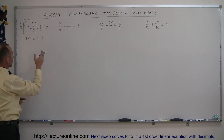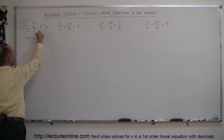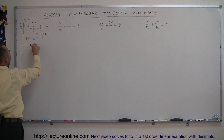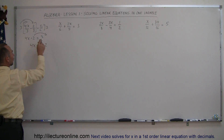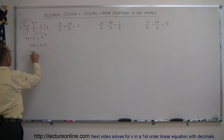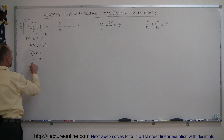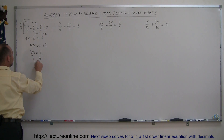You move all the terms with the x to one side, all the terms without the x to the other side. In this case, the minus 2 goes to the right, so you end up with 4x equals 3 plus 2. Remember, the sign changes when you cross the equal sign. So 4x equals 5. Now divide both sides by the numerical coefficient from the variable, and you get x equals 5 over 4.